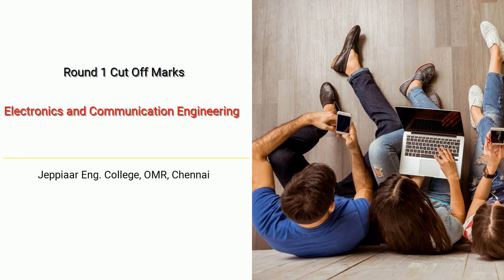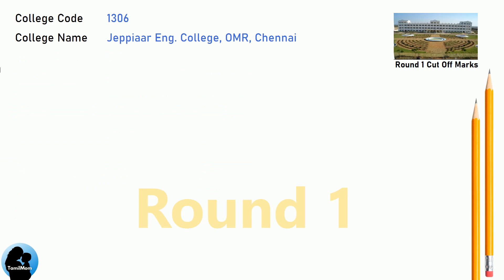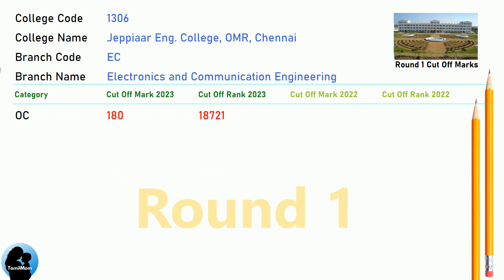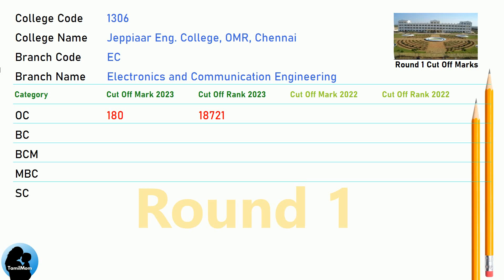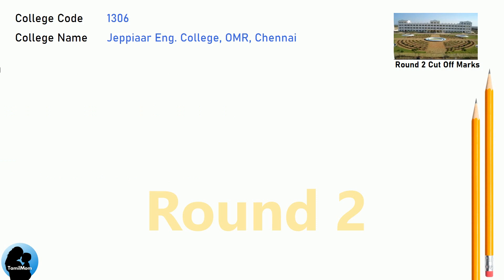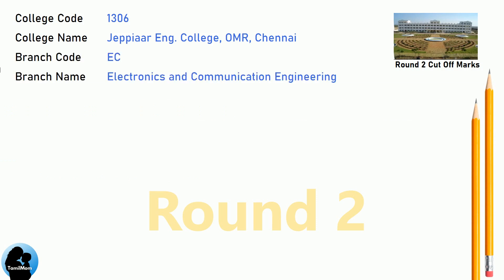DNA Round 1 Cut-off for JPR Engineering College in Electronics and Communication Engineering. DNA Round 2 Cut-off for JPR Engineering College in Electronics and Communication Engineering.